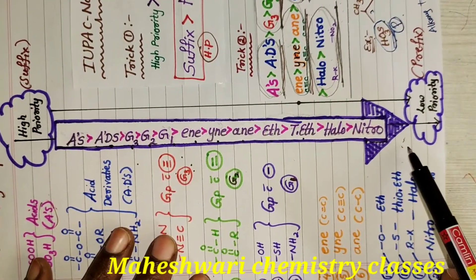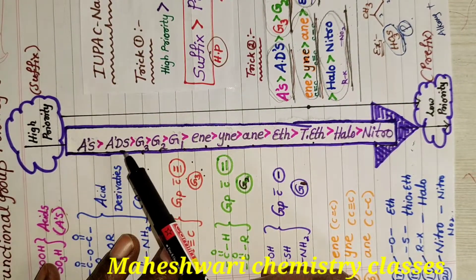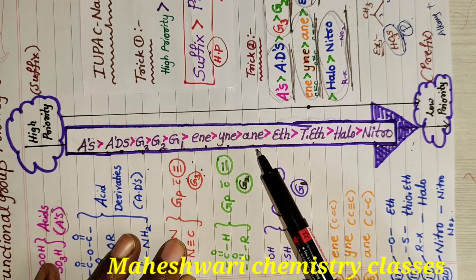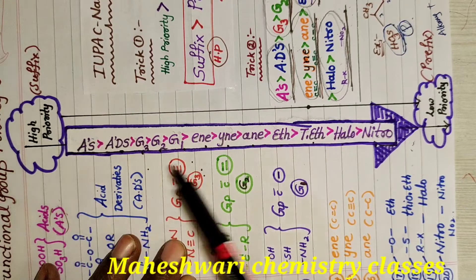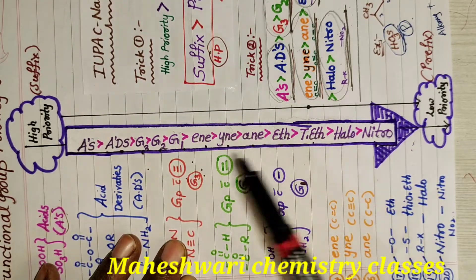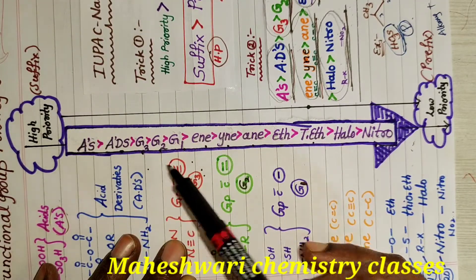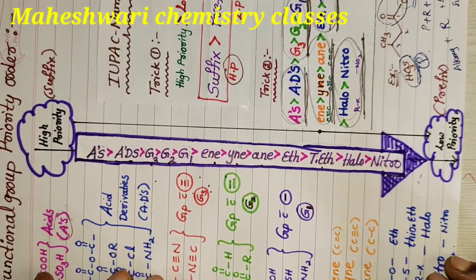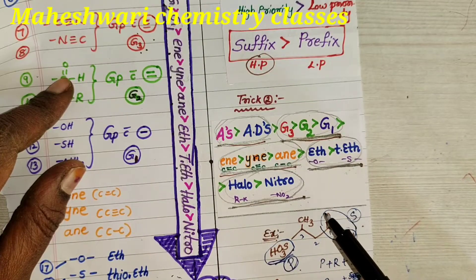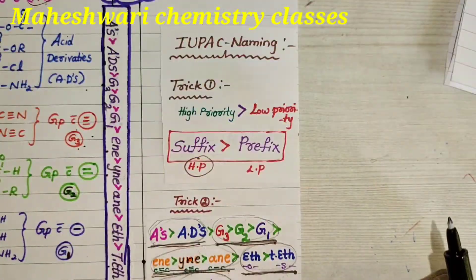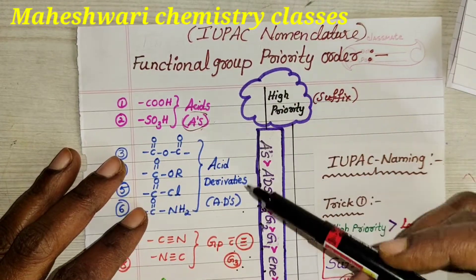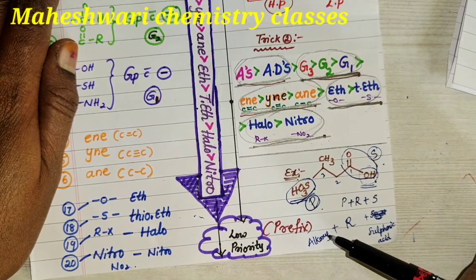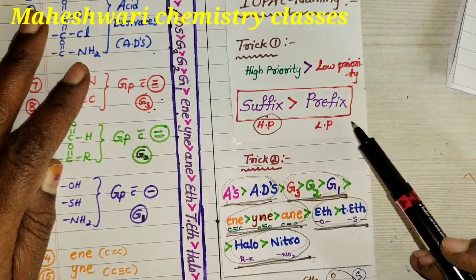From high priority to low priority: high priority groups in the top position are considered as suffix. As we go down, priority decreases and those groups are considered as prefix. Suffix means high priority; prefix means low priority. So, if you have two functional groups — functional group 1 (high priority) and functional group 2 (low priority) — then functional group 1 is the suffix and functional group 2 is the prefix.